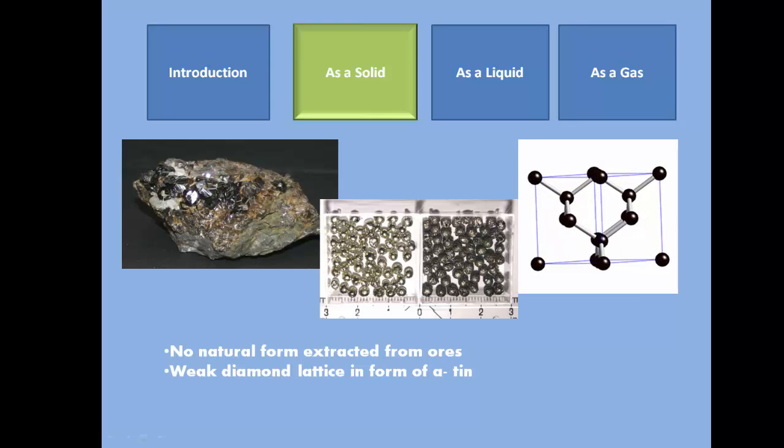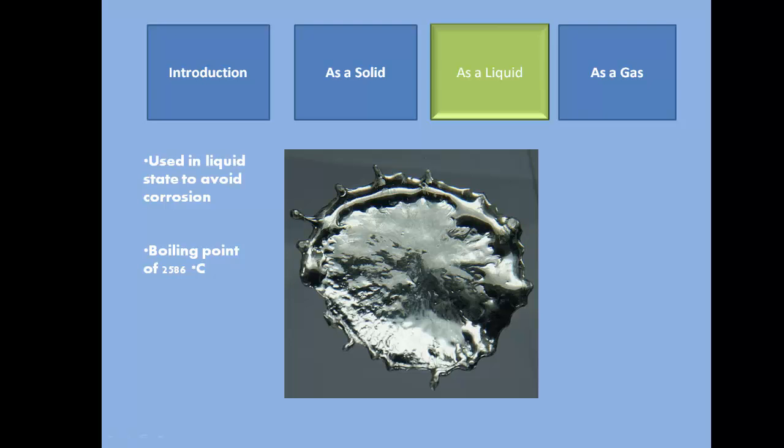Solid tin melts at about 232 degrees Celsius. As a liquid, tin is used to coat other metals to prevent corrosion caused by oxidation. Tin has a density of 7.287 grams per centimeter cubed.